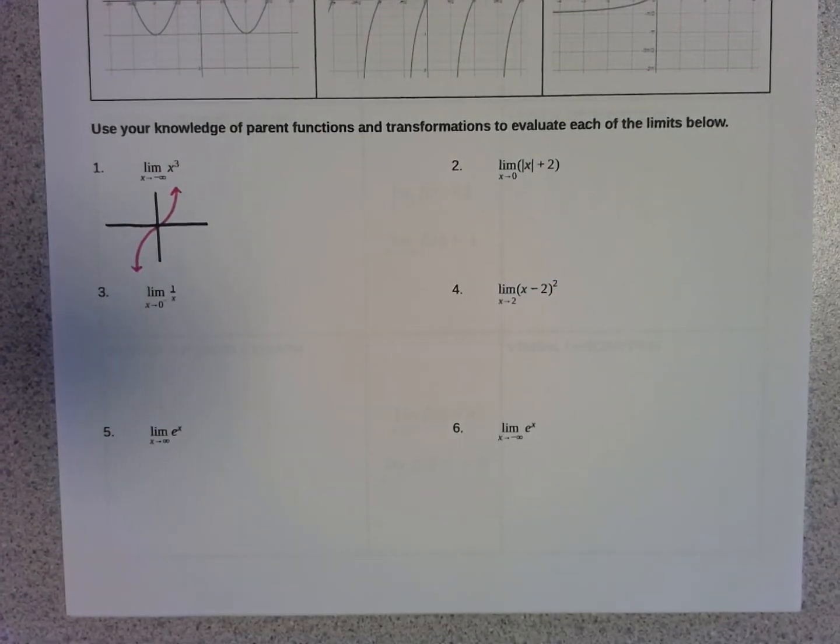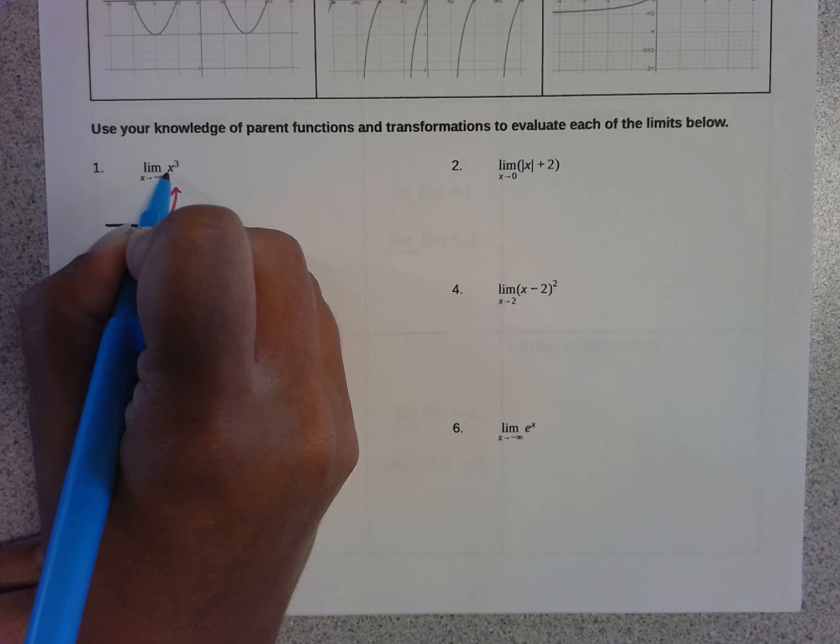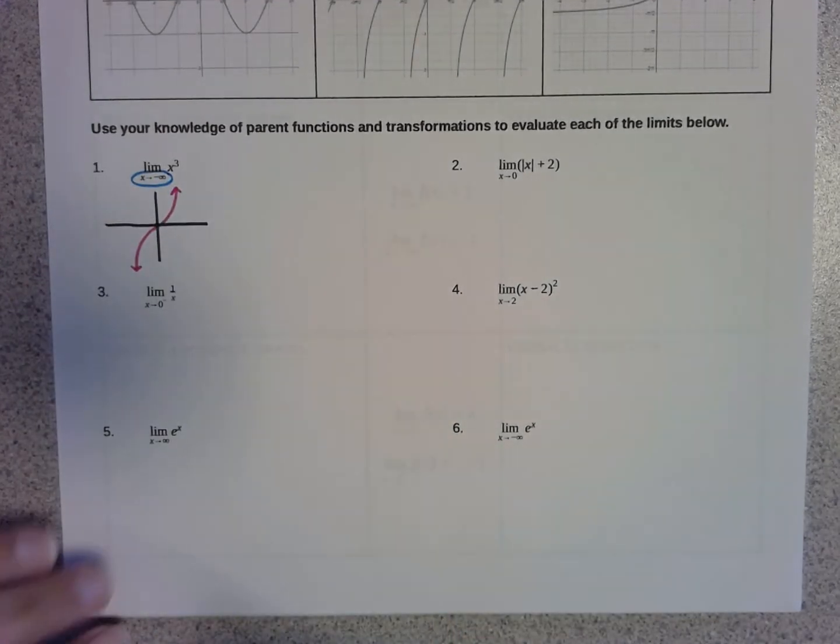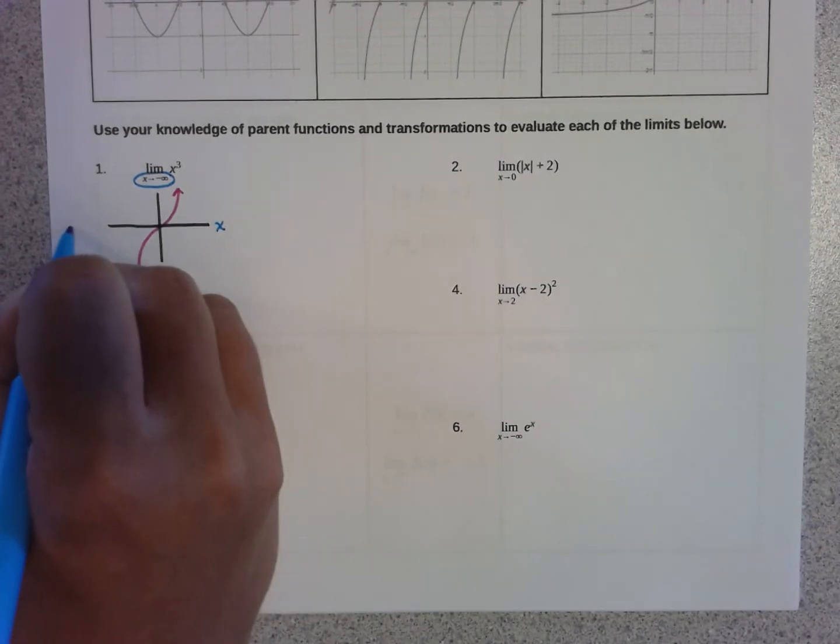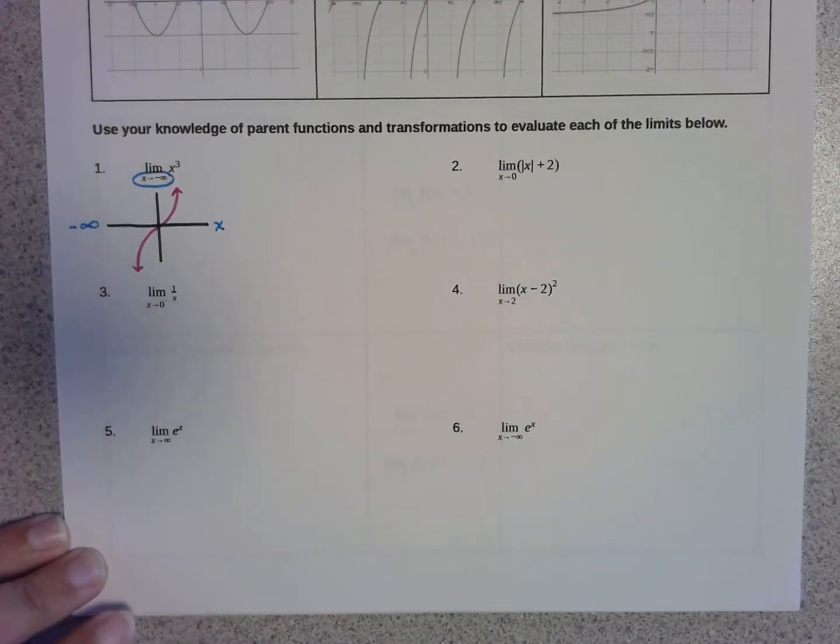So because I know my parent functions, I know that x cubed is a function that looks like this. Now if I'm trying to evaluate the limit as x approaches negative infinity, on the x axis, which is the horizontal axis, negative infinity is over here.